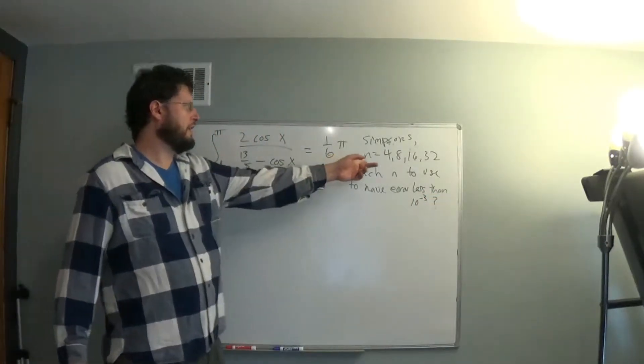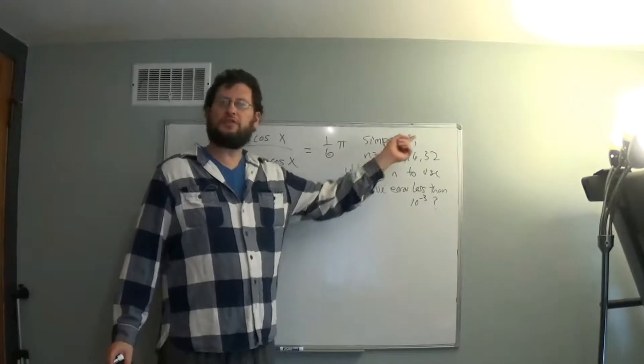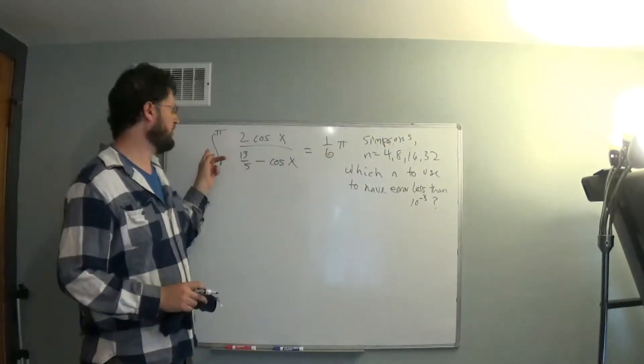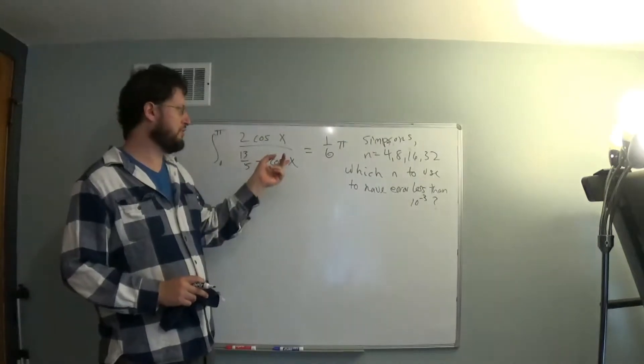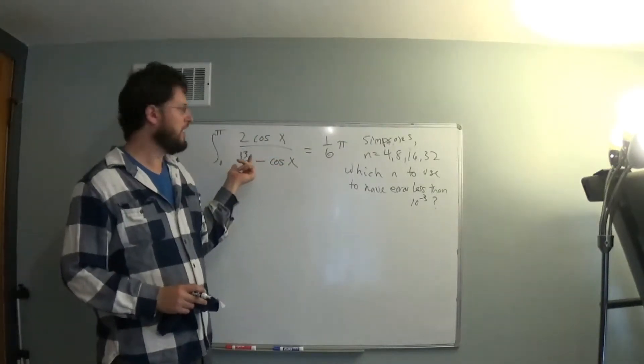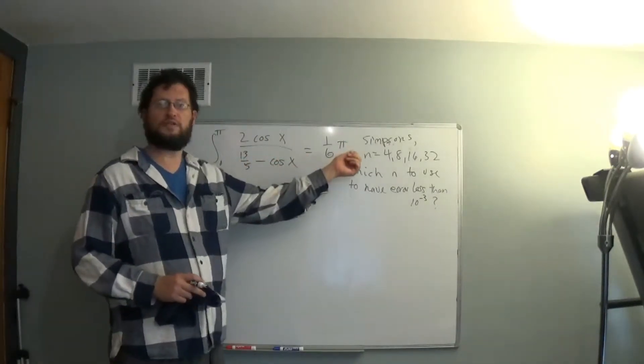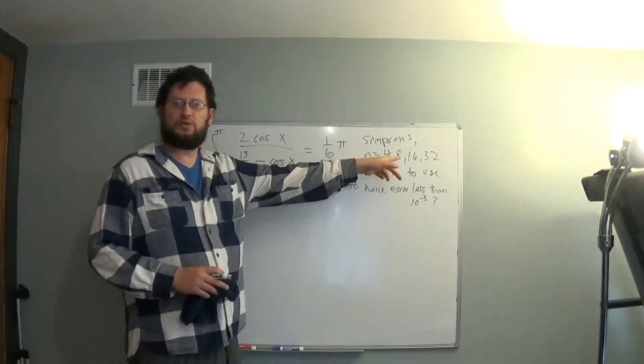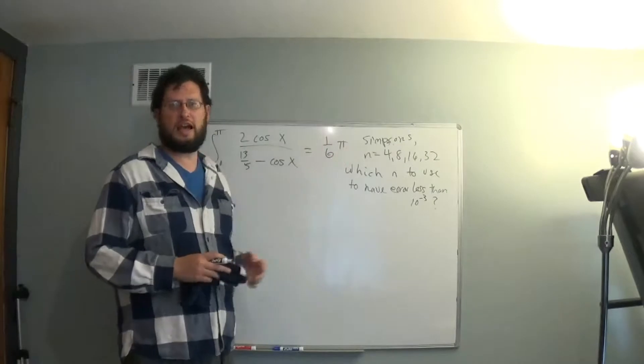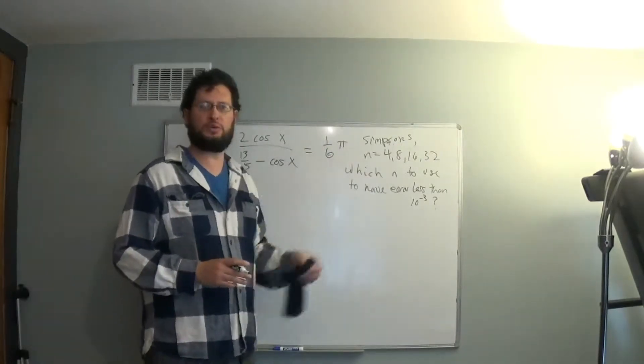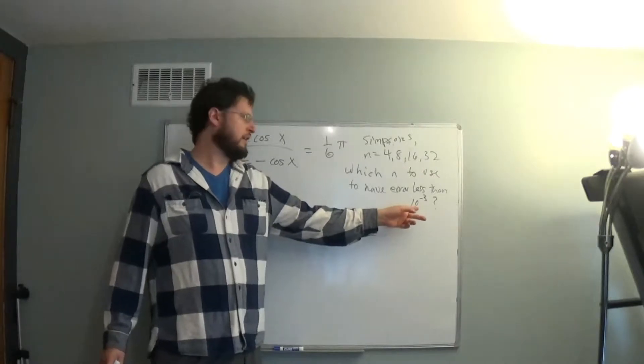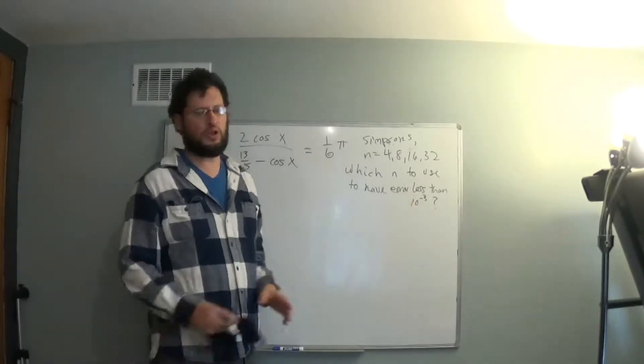As we increase our value of n, we're going to have smaller and smaller error. We're actually told here, we don't have to evaluate this integral. We're told that the value of this definite integral is pi over 6. We'd like to use Simpson's rule to get as close as possible to the actual one and figure out what n value we would use to make sure that we would have a pretty small error. That's 10 to the minus 3 is one thousandth.